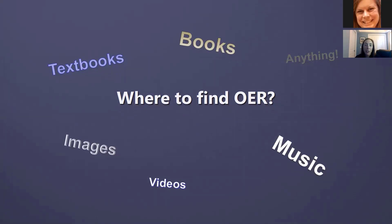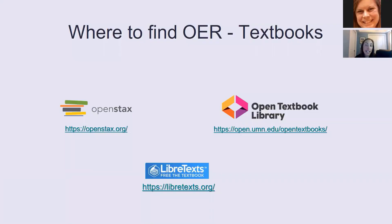There are many places to find open educational resources, and which resource you use depends on the format and often the discipline you're in. The first format I'll cover is textbooks. OpenStax has peer-reviewed content including textbooks suitable mostly for undergraduates, especially 100-level courses. The Open Textbook Library is also peer-reviewed, but these textbooks could be suitable for upper-level or graduate courses and represent a much wider variety of disciplines. The Open Textbook Library also has clinical textbooks, if that's of interest.